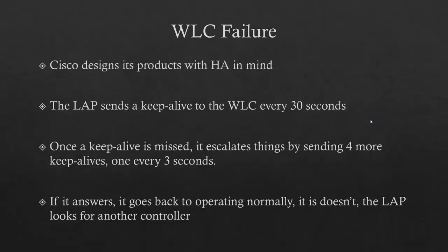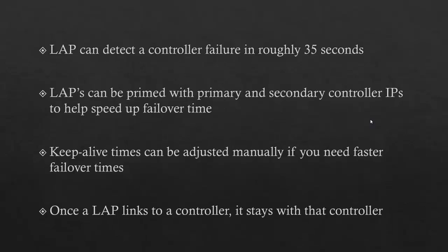Compared to something like EIGRP that sends things every few seconds and marks things down after missing three, 46 seconds is much slower — but with wireless, most people wouldn't bat an eye at a 46-second delay. A lightweight access point can typically detect controller failure in roughly 35 seconds. They can be primed with primary and secondary controller IPs to speed up failover time. Keep-alive times can be adjusted manually if you need faster ones. Also keep in mind that once a lightweight access point links to a controller, it stays with that controller unless something causes it to leave, like the controller failing.